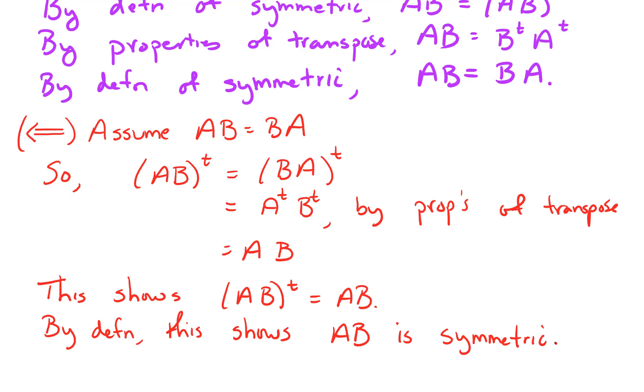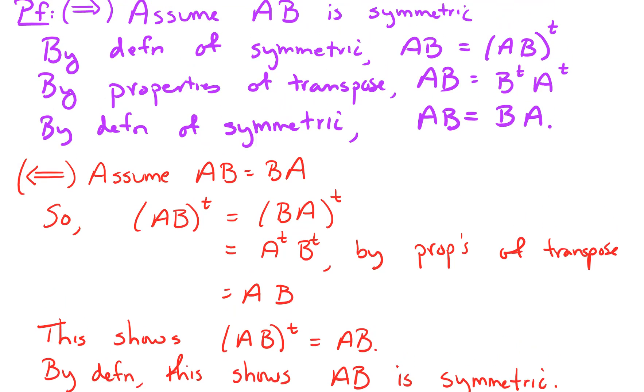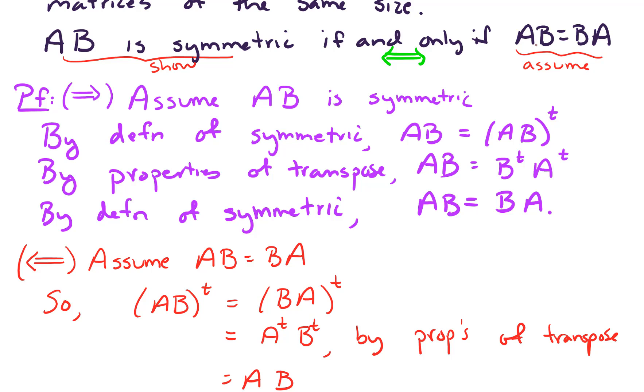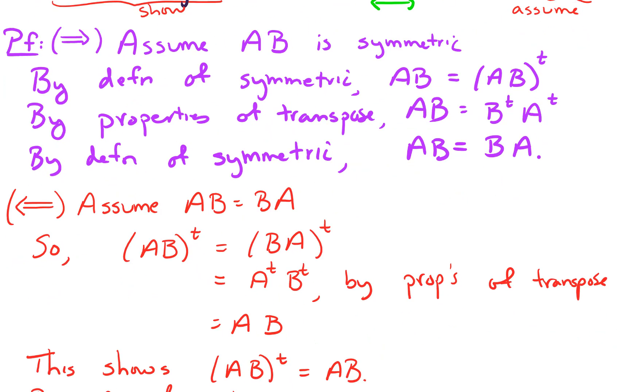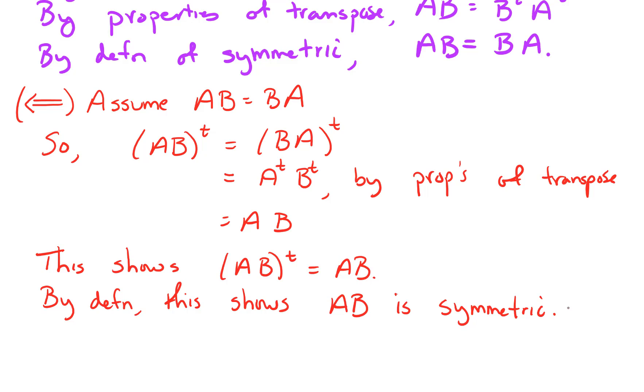So let's go back and review what we were doing. We assumed that the matrices commuted under multiplication, and we wanted to show that AB was symmetric. And we did do that. So that completes our proof.